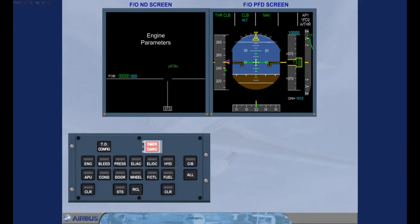During the approach phase, there is no automatic call of the status page when the flaps lever is moved to one, or when QNH is set. To remind the pilots to review status, the boxed status symbol on the engine warning display pulses. The status page should be selected as before.